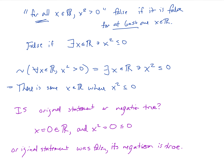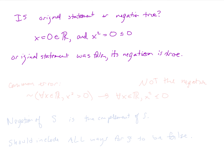I want to talk about a common mistake with negating a statement of this form. A common error would be to say that the negation of 'for any x ∈ ℝ, x² > 0' is 'for any x ∈ ℝ, x² ≤ 0.' That's a common mistake, and this is not the negation. The negation of a statement should be the full complement of the statement — it should include all ways for the statement to be false.